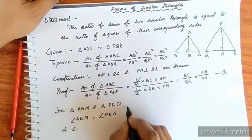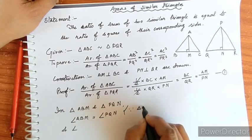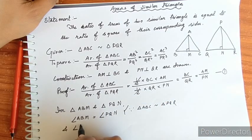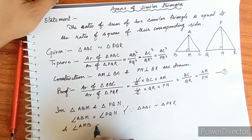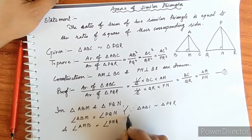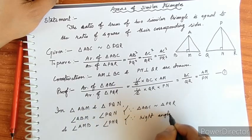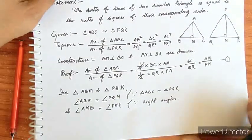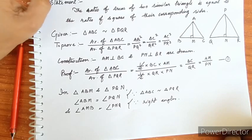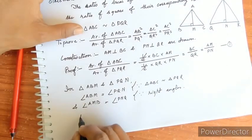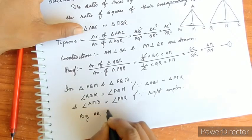Triangle ABC is similar to triangle PQR. Angle AMB equals angle PNQ, both are right angles. By AA similarity, triangle ABM is similar to triangle PQN.